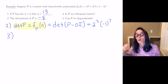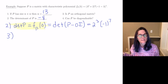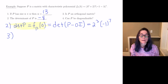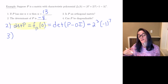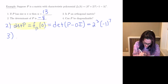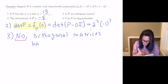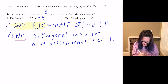Is P an orthogonal matrix? The only real eigenvalue is lambda equals minus 1. P is invertible because the determinant is not 0, but it is not an orthogonal matrix. The reason is that orthogonal matrices have determinant either 1 or minus 1, and that is not the case here — the determinant is minus 8.